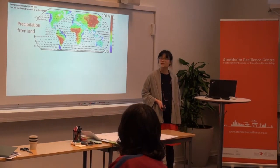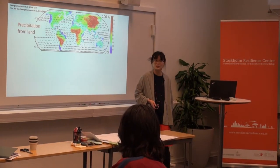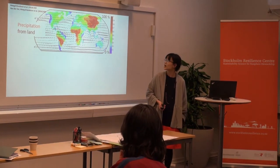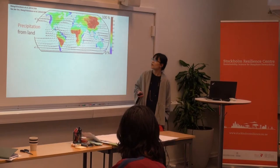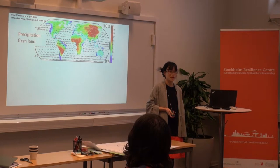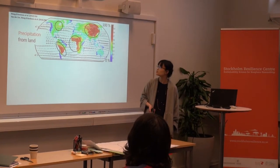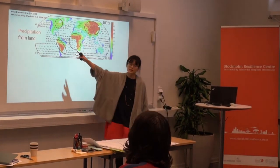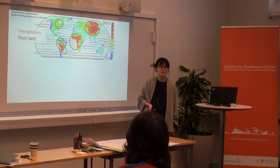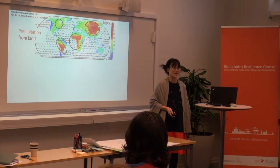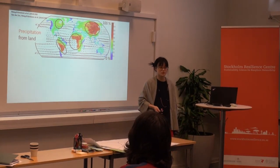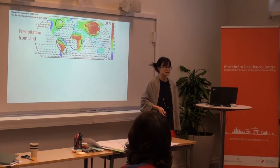On a mean annual scale, this is a map showing where precipitation comes from land. The more red in this figure, the higher the percentage of rainfall that comes from other land areas. You can see regions in South America, West Africa, and Northern Eurasia where up to 80% of rainfall on an annual basis comes from other land areas.